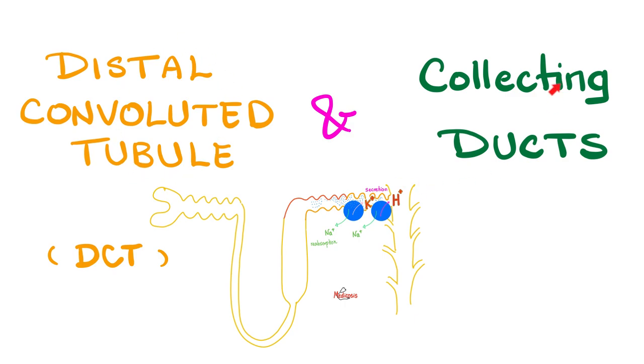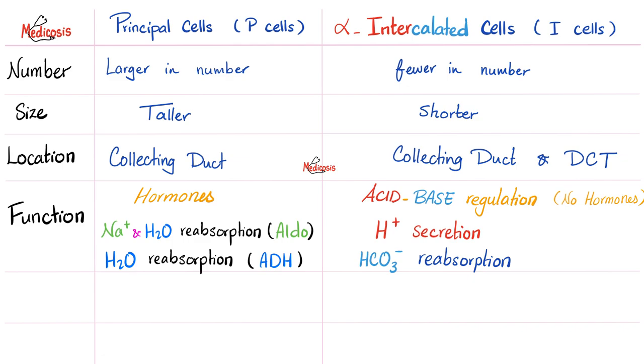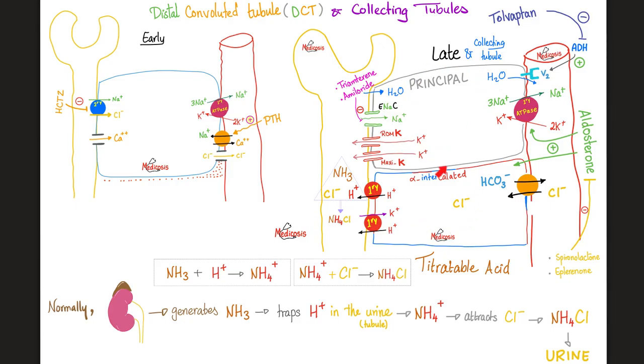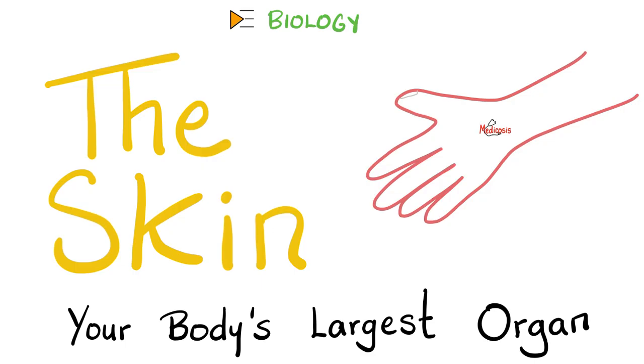After the loop of Henle, you have the distal and the collecting ducts, which contain two different types of cells. Principal cells, because your hormones principally work here, also because these are the most abundant cells, and the alpha-intercalated cells for acid-base balance. Don't forget that aldosterone wants to reabsorb salt and water. It also wants to dump potassium and hydrogen. But ADH wants to absorb only pure water. This is ADH or vasopressin, which acts on V2 receptor, opening aquaporin-2 channel to reabsorb H2O. And this is facultative. This is free water. Take a deep breath, because we're done with the kidney.